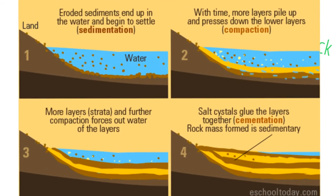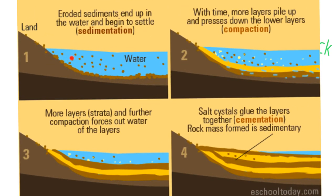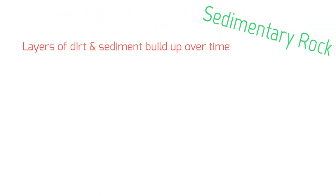On to our next rock: the sedimentary rock. How do these rocks form? This graphic does a great job describing it. First, eroded sediments end up in water and begin to settle — little bits of rocks settling to the bottom. Over time, more and more layers pile up. As they press down on each other, we get compaction happening. More and more layers build until there's so much pressure that they've actually glued themselves together to become a rock.